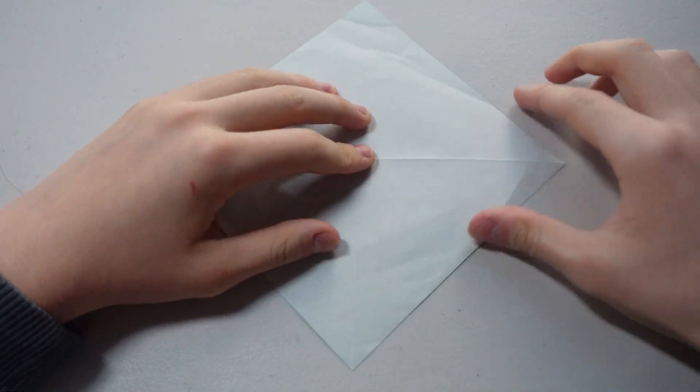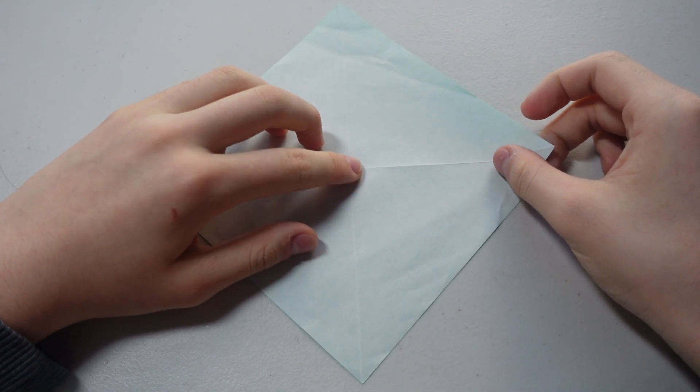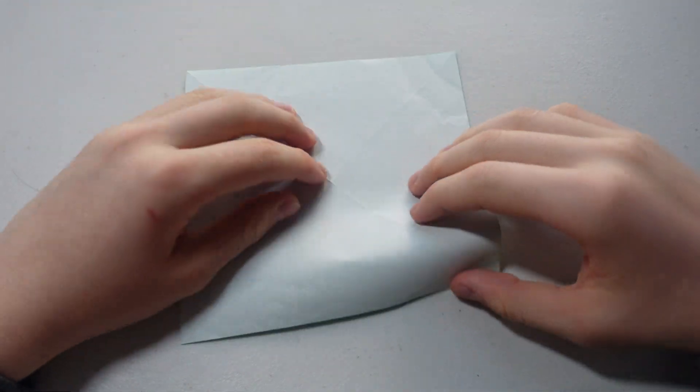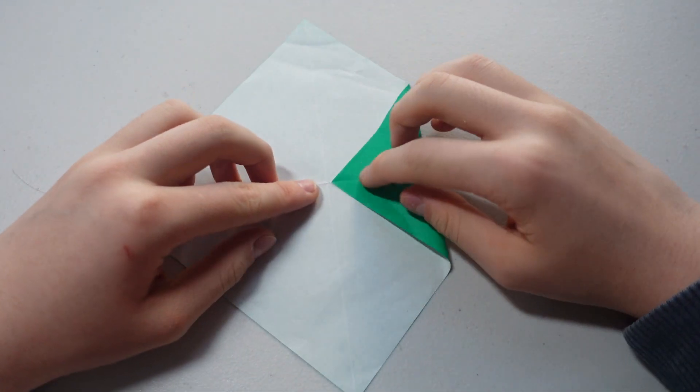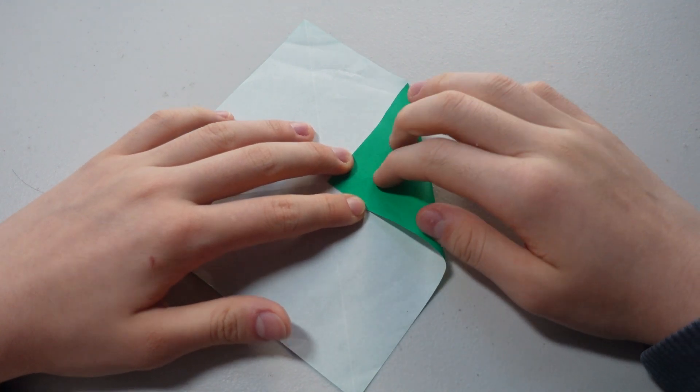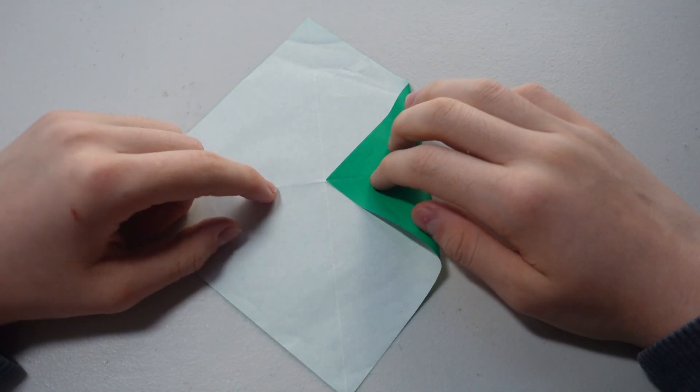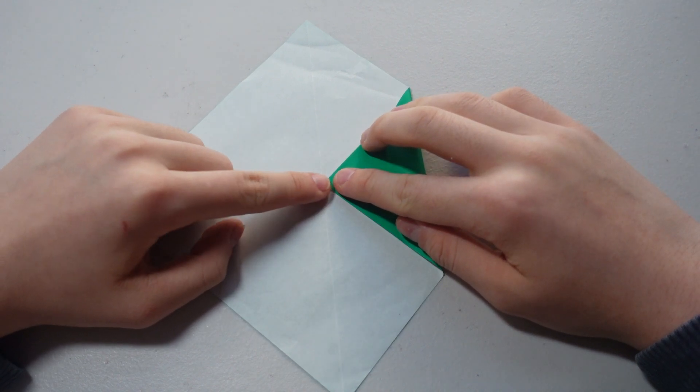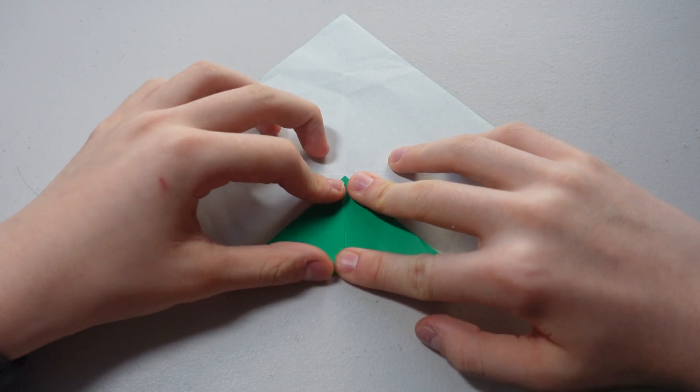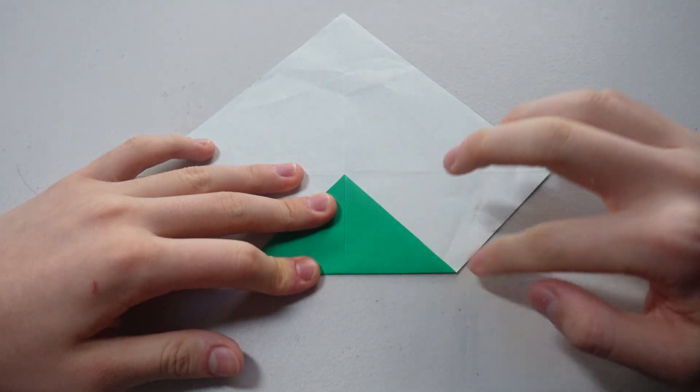Now you want to put this part right in the middle and this part also in the middle. This is how you do it, just fold it like that. Make sure you got the lines right here. Make sure it lines up with this line. There you go.